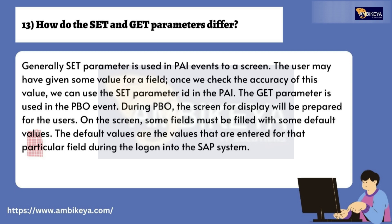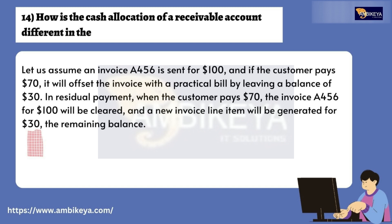Question number thirteen: How do the set and get parameters differ? Generally, the set parameter is used in PAI events on a screen — when the user has given some value for a field, once we check the accuracy of this value we can use the set parameter ID in the PAI. The get parameter is used in the PBO event. During PBO, the screen for display is prepared for the user, and some fields must be filled with default values — the values entered for that particular field during logon into the SAP system.